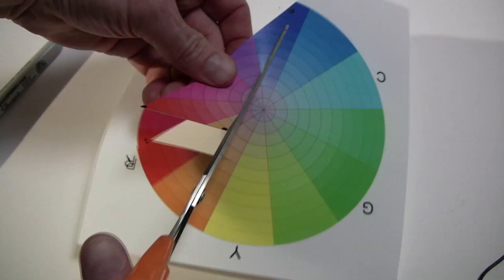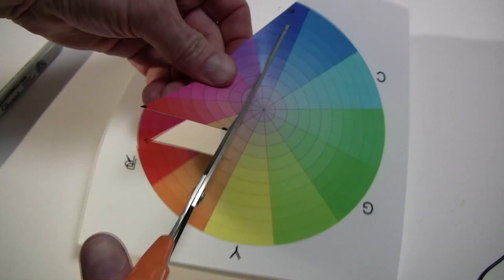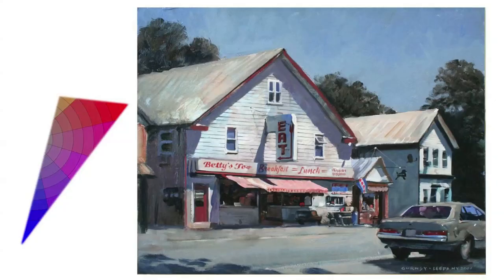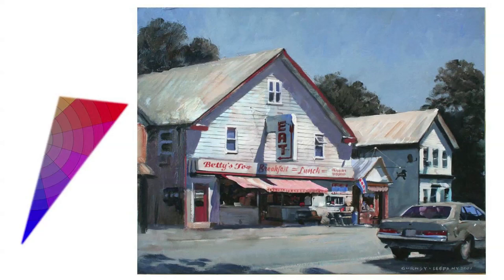We're leaving out yellows and greens and cyan because you can't mix them from those colors. This is called the color gamut. It's the full range of colors possible from those three starting colors. And here's a painting done with that limited color gamut.